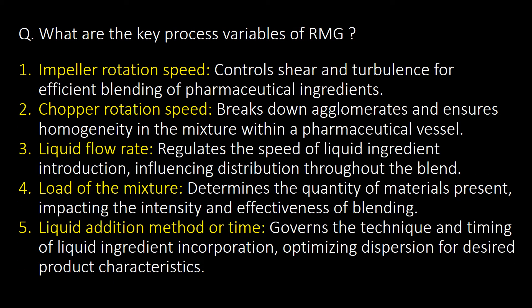What are the key process variables of RMG? Here are the 5 key or important process variables of RMG. These include: first, impeller rotation speed; second, chopper rotation speed; third, liquid flow rate; fourth, load of the mixture; and fifth, liquid addition method or time.